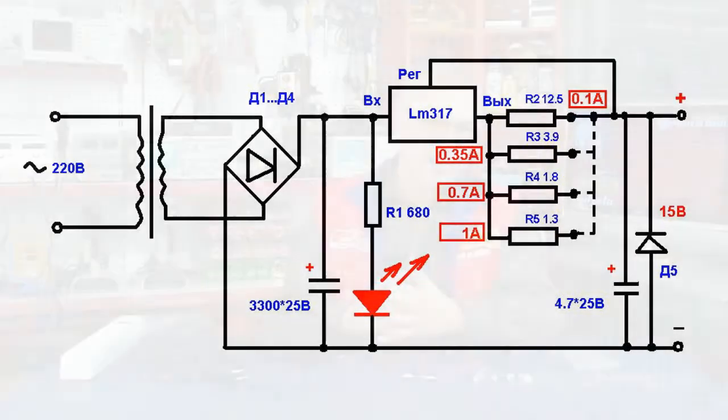These operating capabilities were applied to make a simple power source for light-emitting diodes with discrete switching of current ranges.